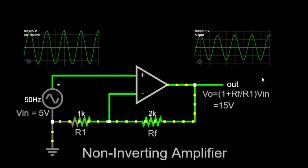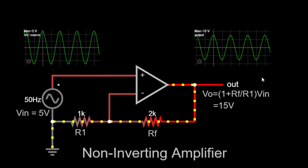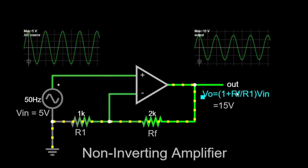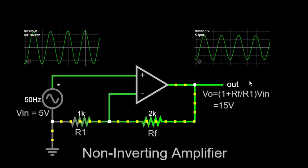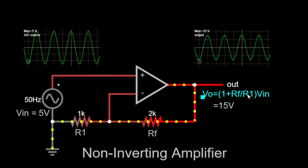The gain of the non-inverting amplifier is determined by the ratio of the feedback resistor (Rf) to the input resistor (R1). The formula for calculating the gain is simply 1 plus Rf by R1.